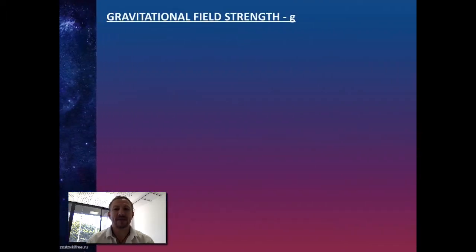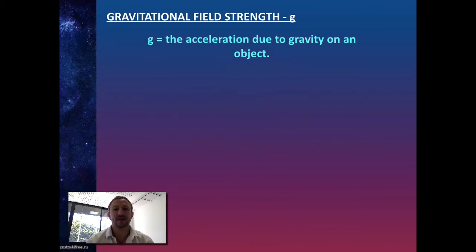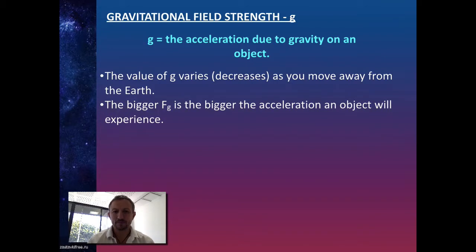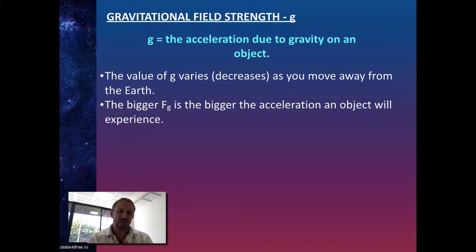We need to be able to calculate our gravitational field strength at any specific point. Our gravitational field strength g is the acceleration due to gravity on an object. As we go further out, g is going to decrease. Currently on the surface of the planet g is 9.81 metres per second per second, but as we move away that gets less and less. The bigger Fg is, the bigger the acceleration on an object, and we're experiencing our maximum g at the surface of the Earth.